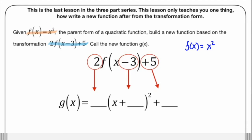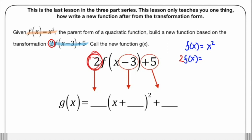Starting from there: given f of x equals x squared, we're going to apply this function notation to get a new function, which we're going to call g of x. We'll show you how to build that step by step. The first thing it tells us to do is take the function and multiply it by 2. So I'm going to write this out, multiplying both sides by 2, and putting the 2 in front of the parentheses to form g of x.